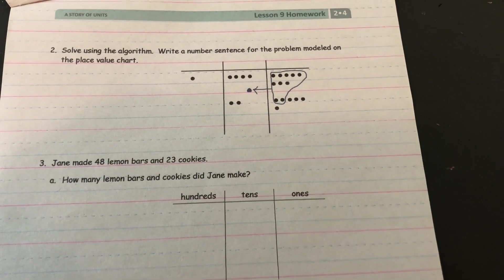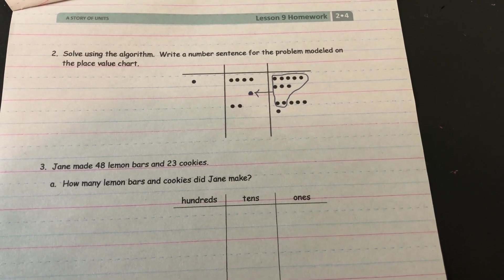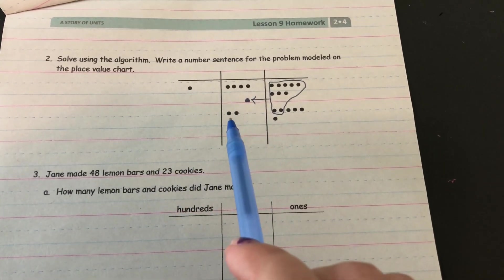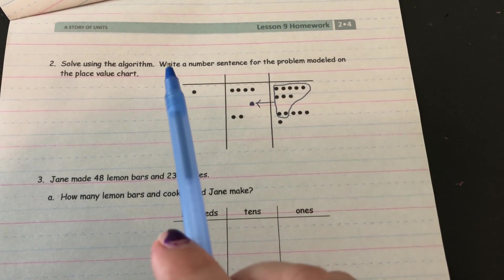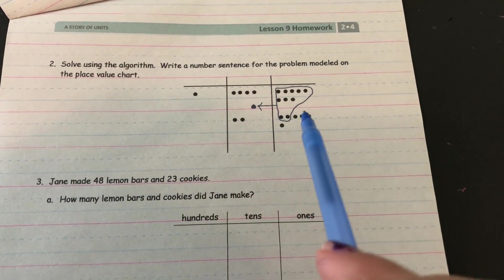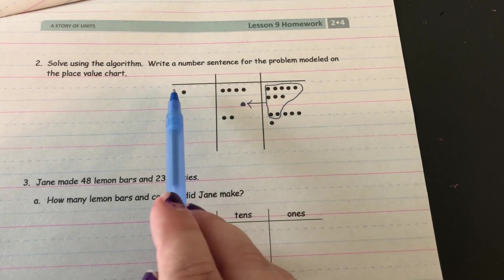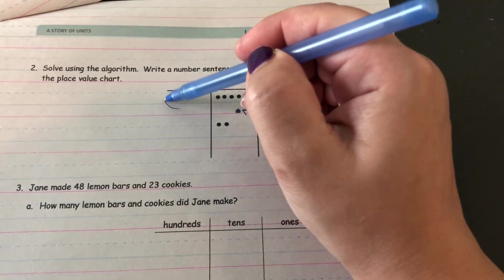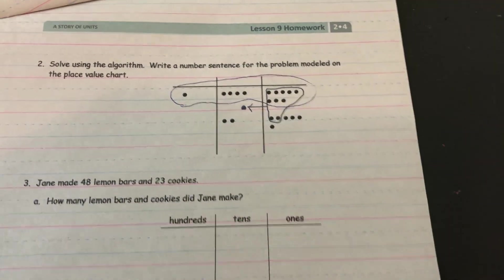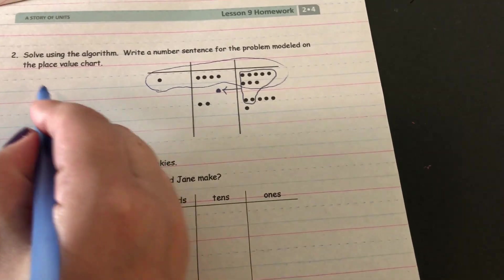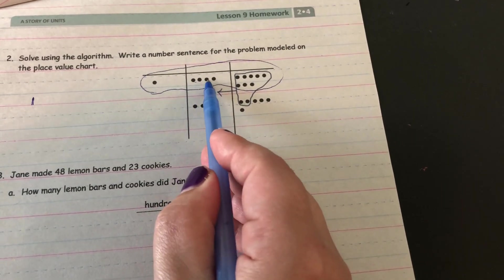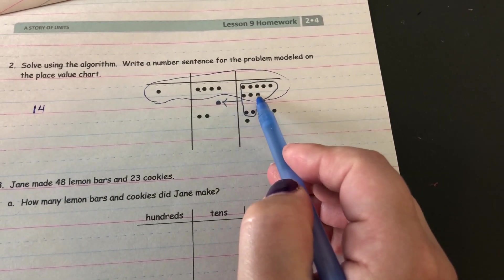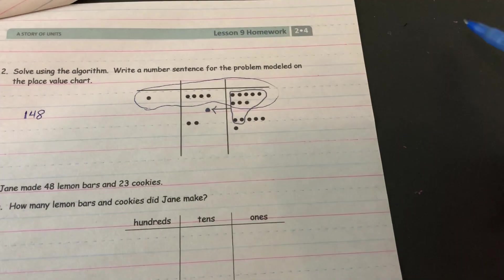Number two says to use the algorithm, write a number sentence for the problem modeled on the place value chart. So they're giving you the place value chart and they want you to figure out what the equation was. So you're going to look at what they started with on top. So they started with, and you can even kind of see it right here, what they started with. This number has 100, it has four tens, and it has five, six, seven, eight ones. So they started with 148.